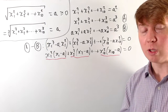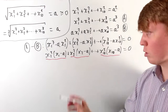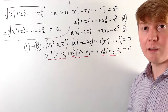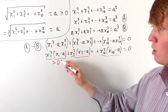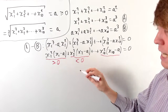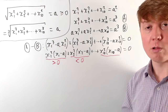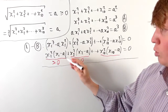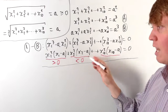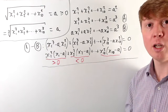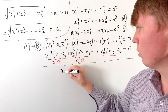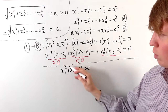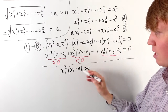Now combining this with our restriction on x values: we have a sum of terms that must total zero. One solution is simply that all terms are zero. But if some terms weren't zero, some would have to be positive and some negative to cancel out. If one term is positive, another must be negative. So if xi squared times (xi minus a) is positive — and since xi squared is always non-negative, this means (xi minus a) is positive — then xi is greater than a.